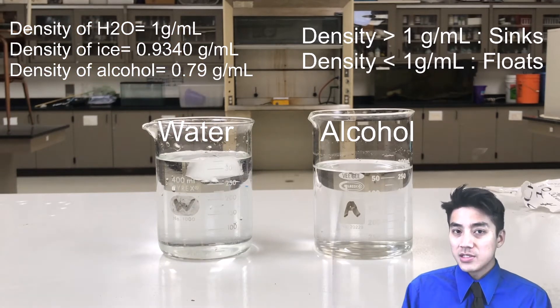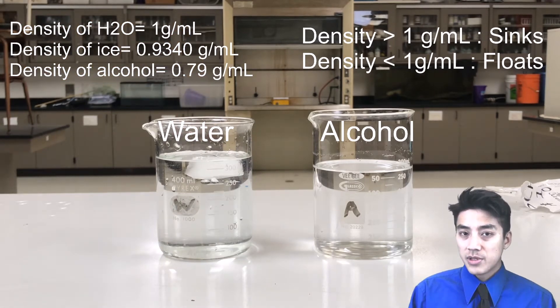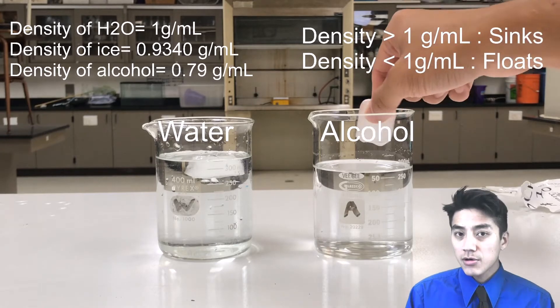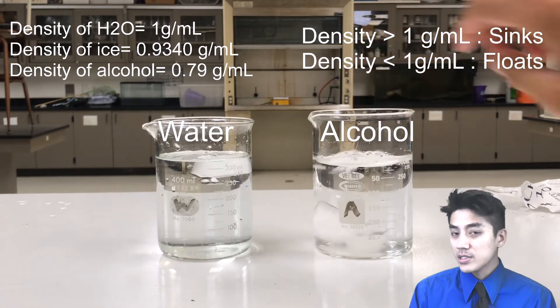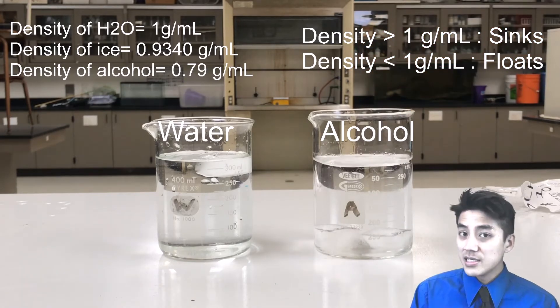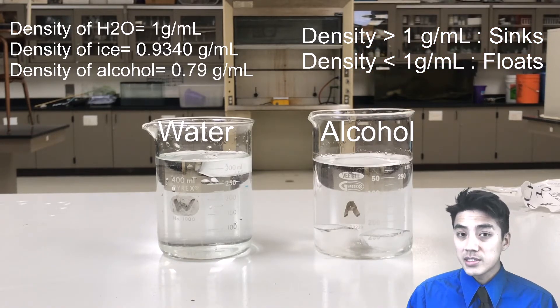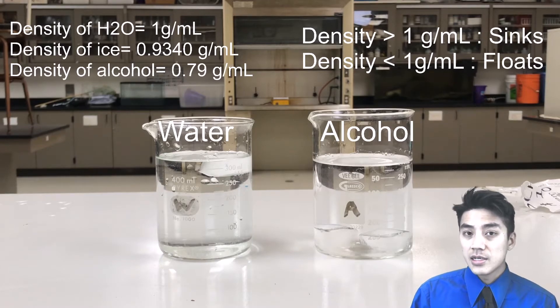You already know that ice will float in water, so the beaker on the left contains water, so the ice floats. But the beaker on the right has alcohol, and alcohol is actually less dense than the ice. It has a density of 0.79. Ice has a density of 0.93, so it makes sense for the ice to sink in alcohol.